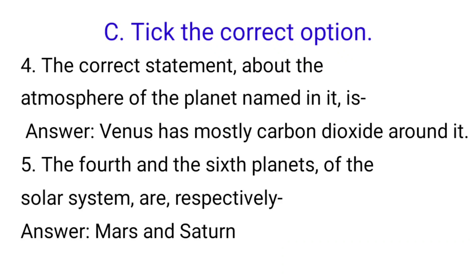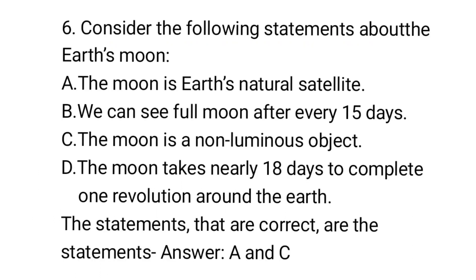4. The correct statement about the atmosphere of the planet named in it is Answer: Venus has mostly carbon dioxide around it. 5. The fourth and the sixth planets of the Solar System are respectively Answer Mars and Saturn.